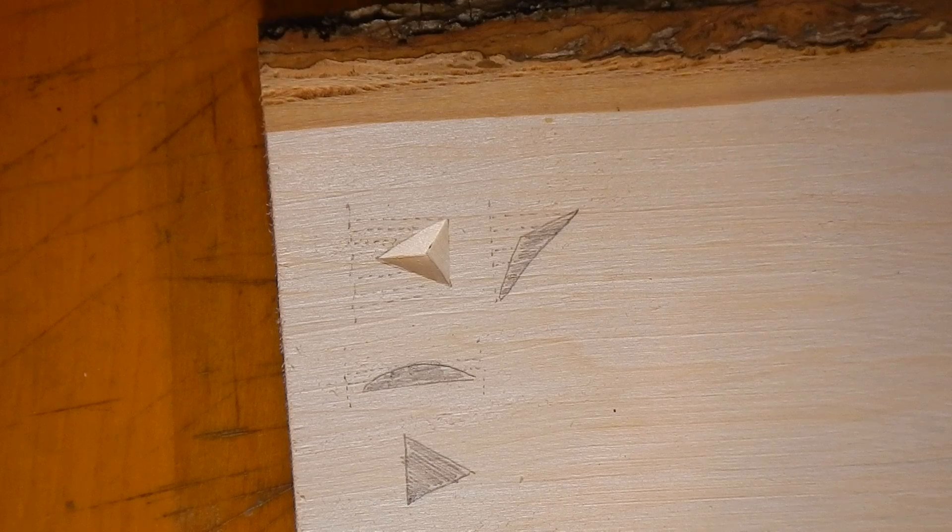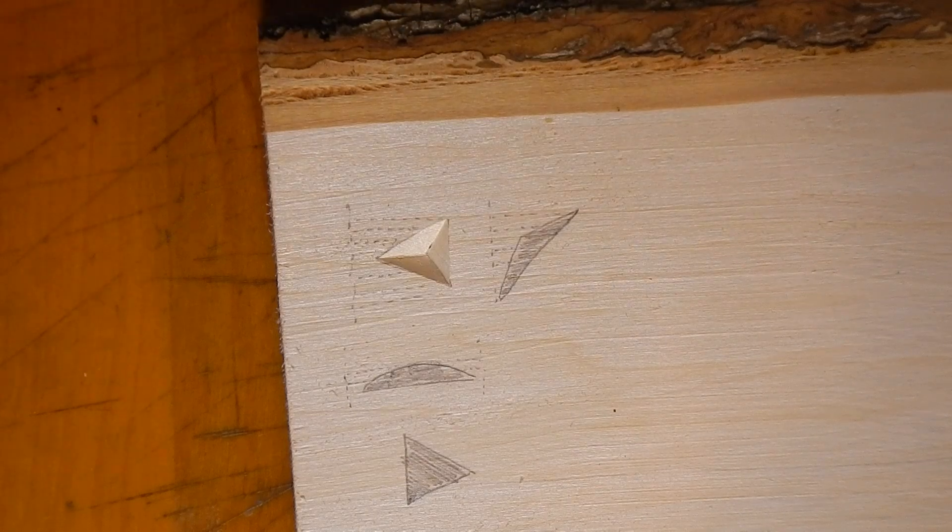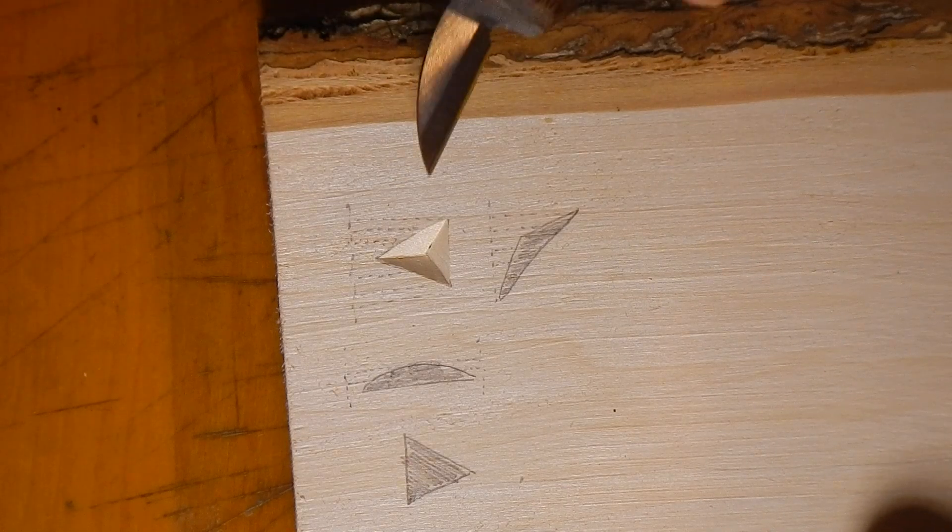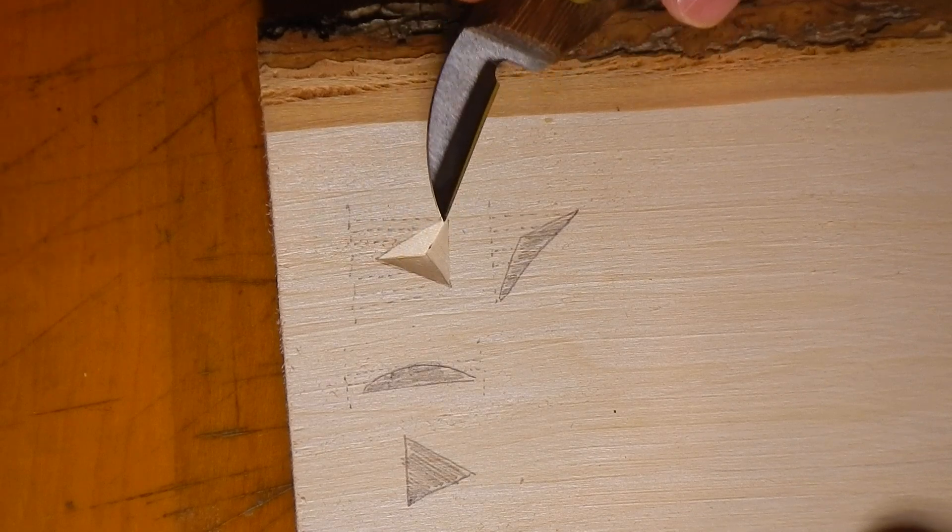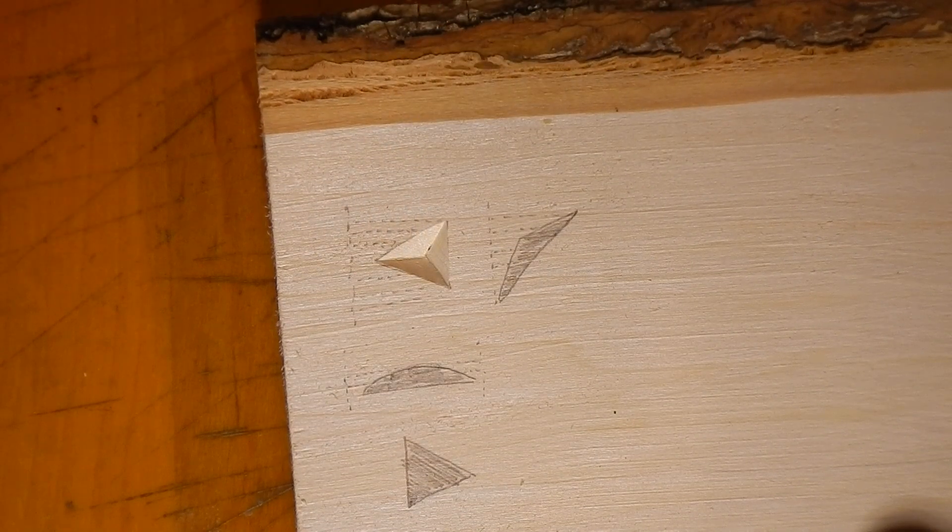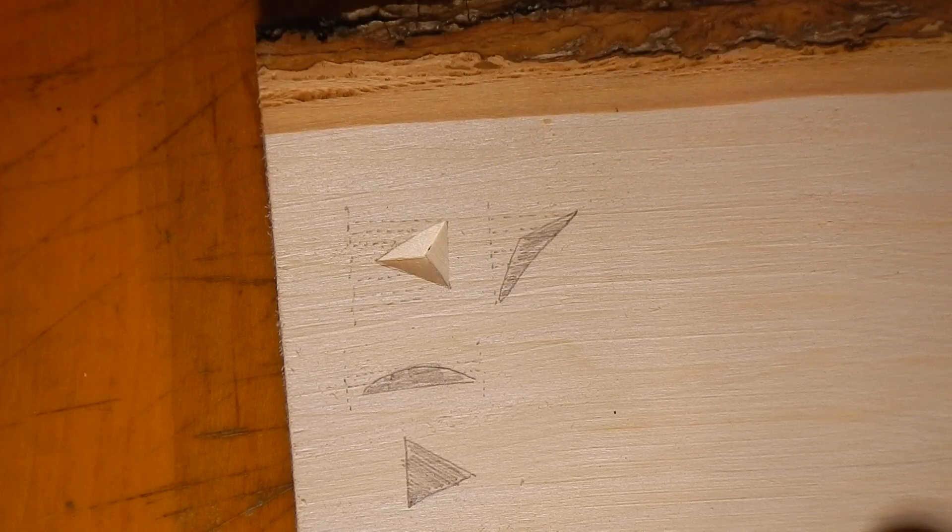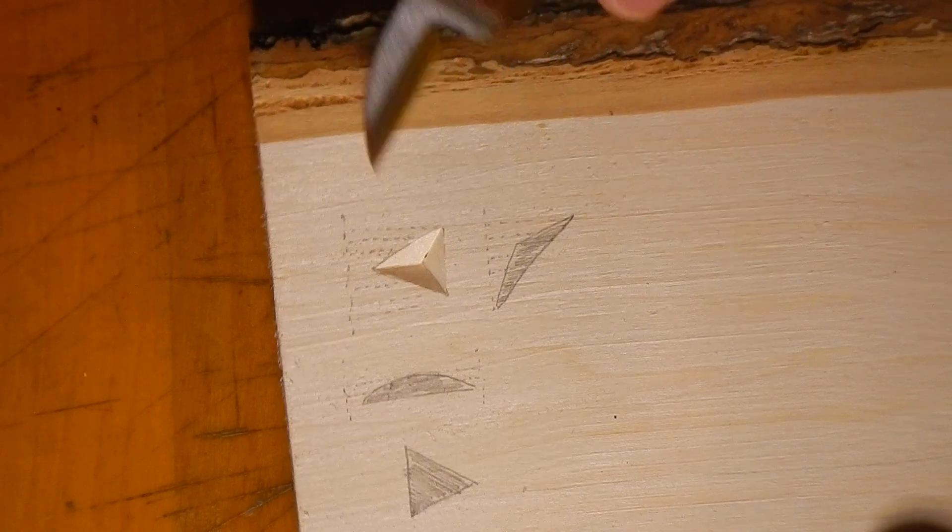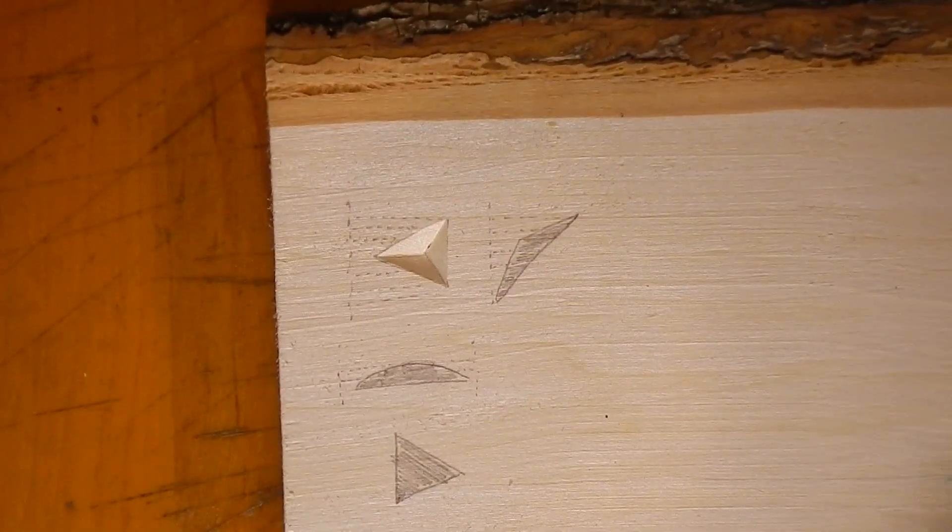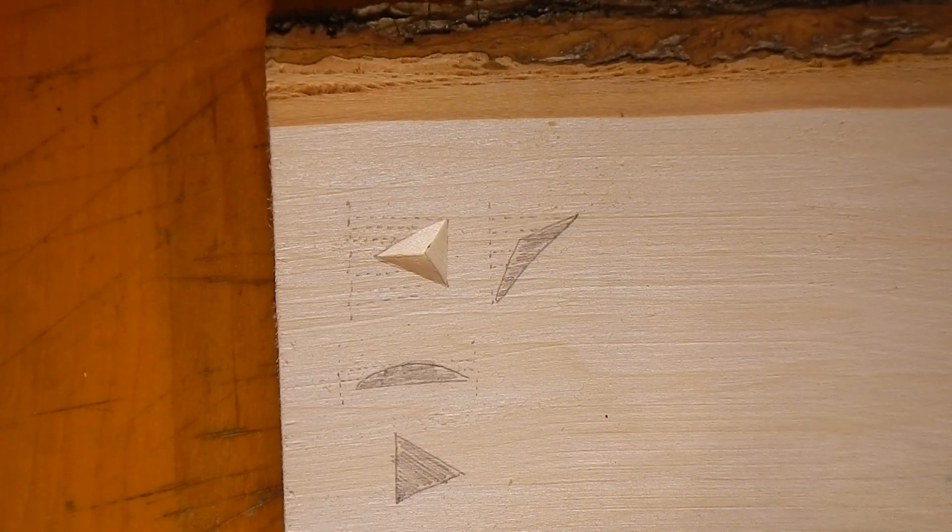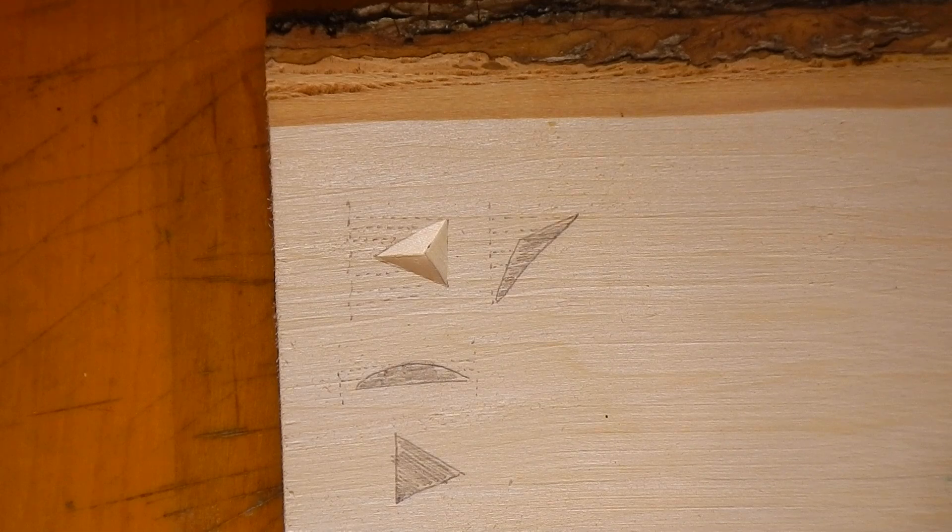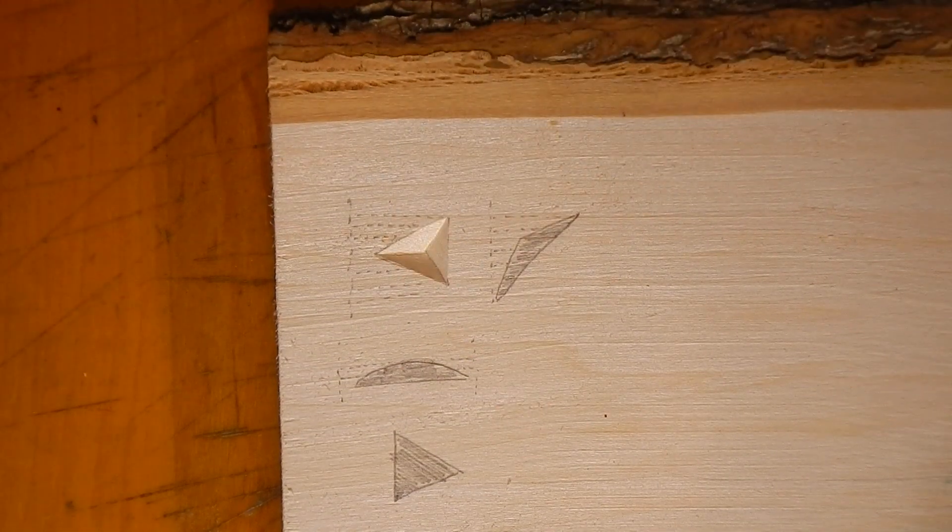And it's common with triangles, depending on what your pattern is, that you'll have one with the grain, one against the grain, and one across the grain. Or if I rotated this 90 degrees, I could have one that's with the grain, against the grain, and along the grain direction. But you're going to have different grain cuts on geometric shapes like this.